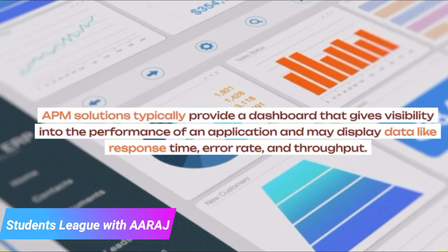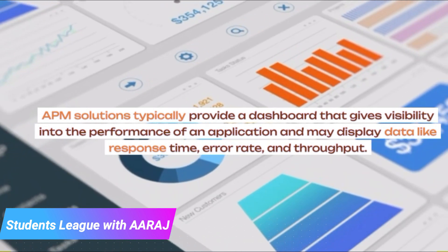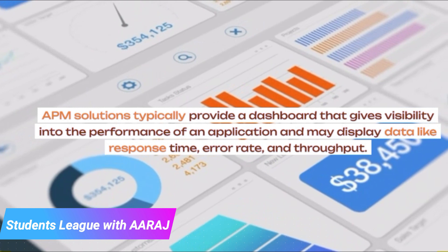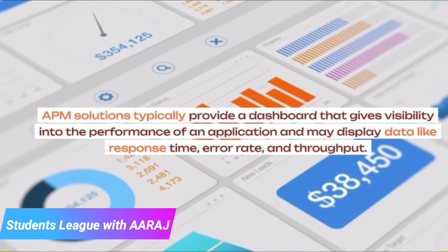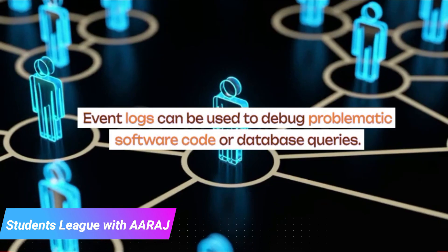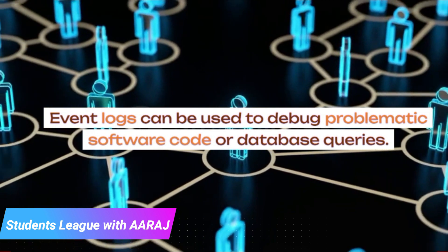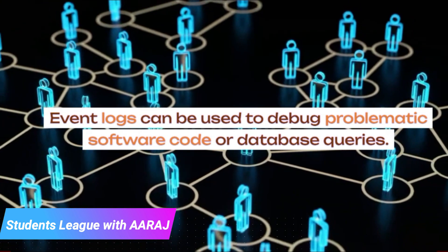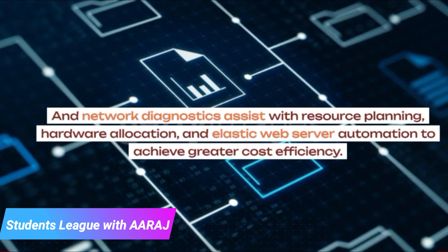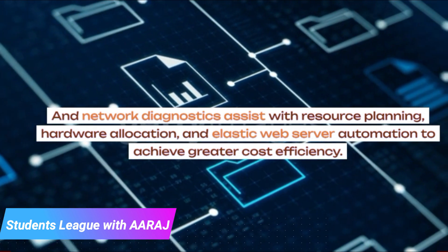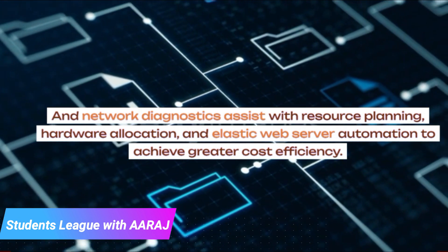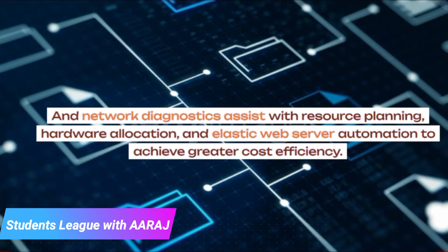APM solutions typically provide a dashboard that gives visibility into the performance of an application and may display data like response time, error rate, and throughput. Event logs can be used to debug problematic software code or database queries. Network diagnostics assist with resource planning, hardware allocation, and elastic web server automation to achieve greater cost efficiency.